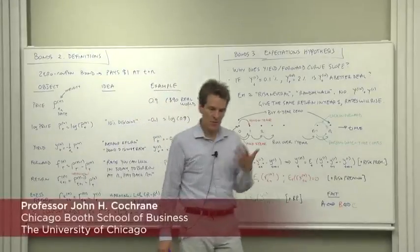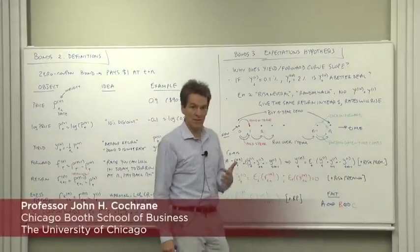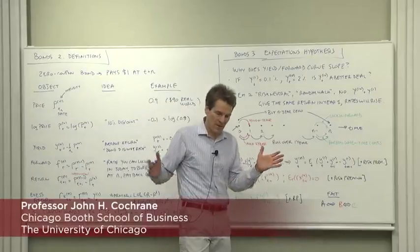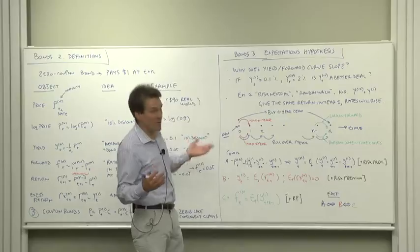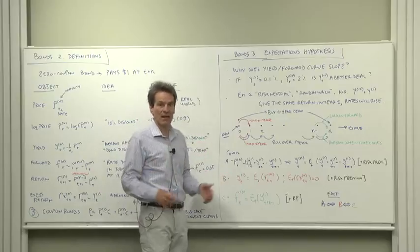One of the main things we want to do is create models of the yield curve. What is the pattern of yields across maturities at any given moment in time? Might be upward sloping, might be downward sloping, how do we model that?